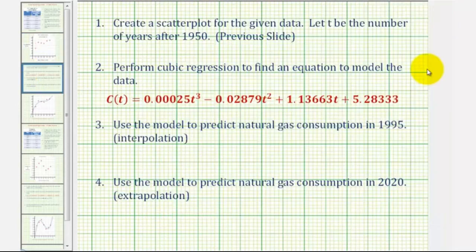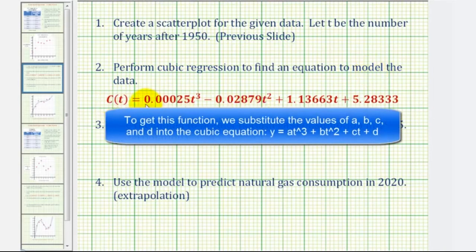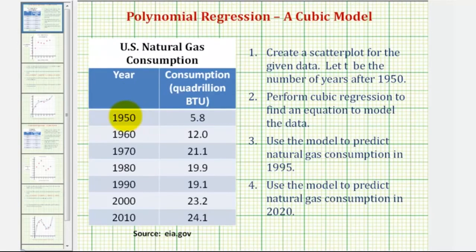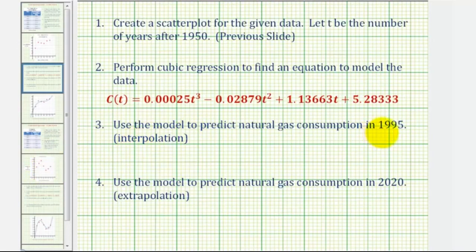Let's go back to our questions. Number one was to create a scatter plot, which we already did. Number two, we performed the cubic regression — to five decimal places this gives us our function C(T), using T instead of X. For number three, we predict natural gas consumption in 1995. Since 1995 is within the given data range of 1950 to 2010, this prediction is called interpolation. For number four, predicting 2020 — which is outside the data range — is called extrapolation.